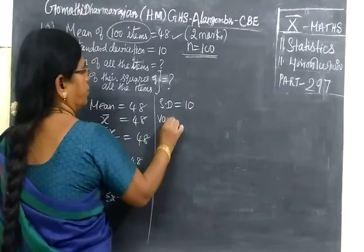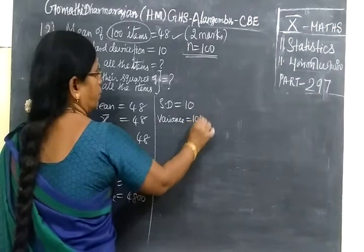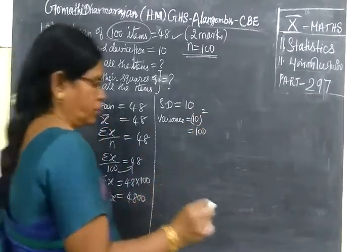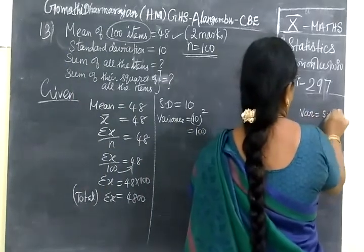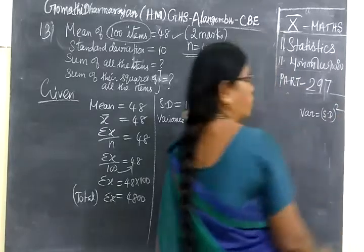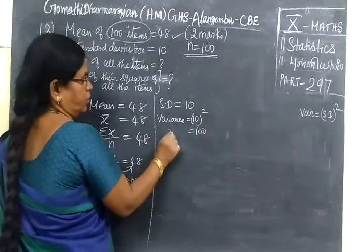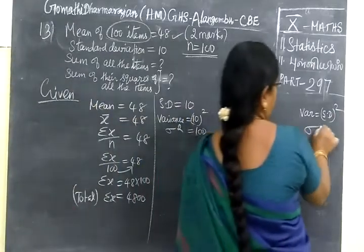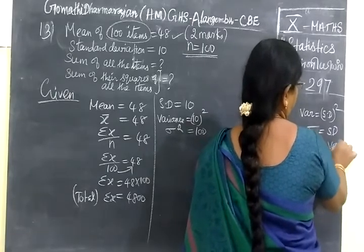Because we know the formula, variance equal to standard deviation whole square. Variance is sigma square. Sigma is standard deviation. Sigma square means variance.